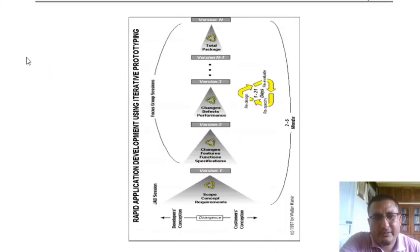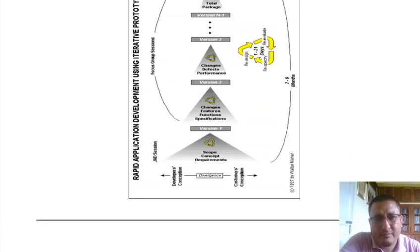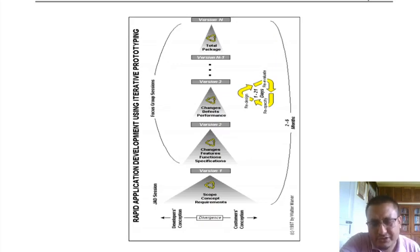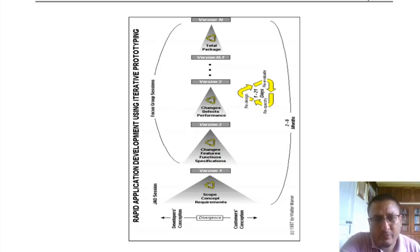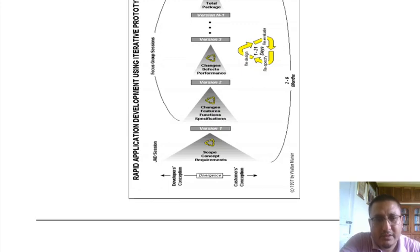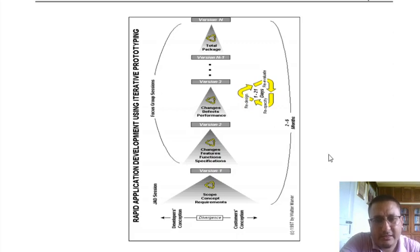This is a diagrammatic representation of the Rapid Application Development model. RAD has a development time of two to six months, aiming at developing the software system within that period. Across various phases, different versions are released. The overall development cycle is divided into two sessions: one called JAD (Joint Application Development) and the other called FGS (Focus Group Session).